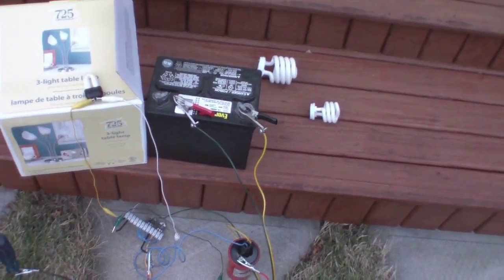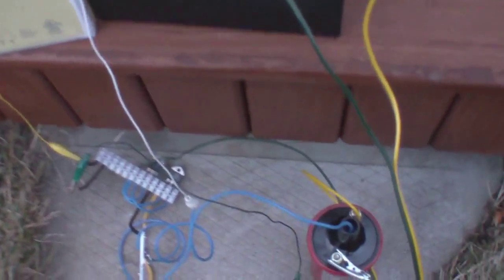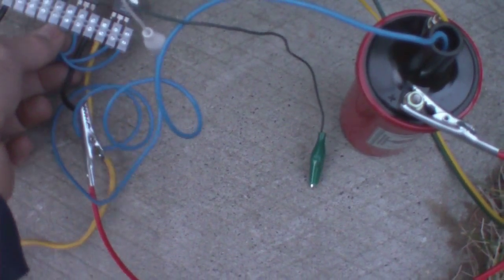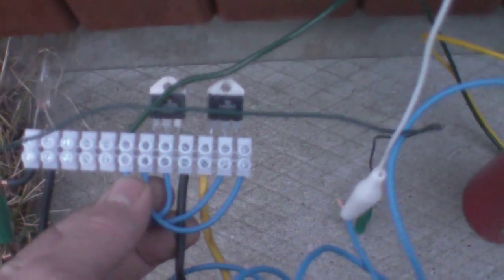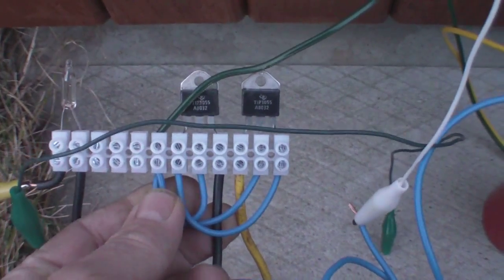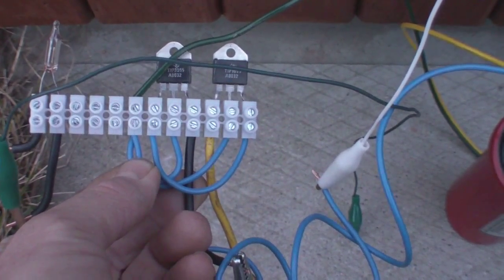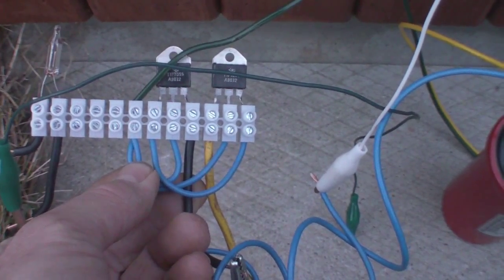Here's my replication attempt. It's not quite working the way it should, but just to go over it. You can see that on these TIP 3055s it goes BCE (base, collector, emitter). The one on the left...